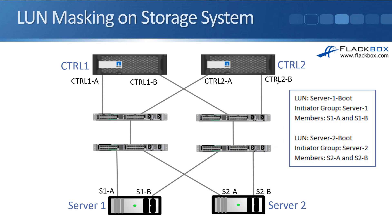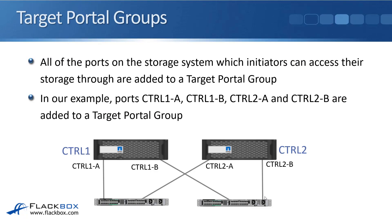We also need to configure LUN masking on the storage system. We create a LUN for Server 1 and a LUN for Server 2. For the Server 1 LUN, S1A and S1B are both on Server 1, so they are both allowed to connect to that LUN. For the Server 2 LUN, S2A and S2B on Server 2 are allowed to connect to it. That completes the zoning and LUN masking.